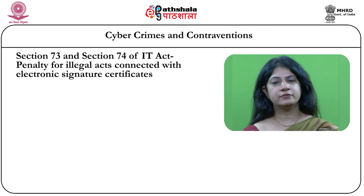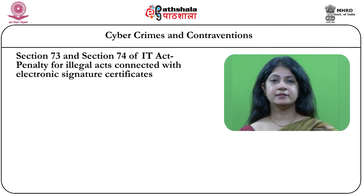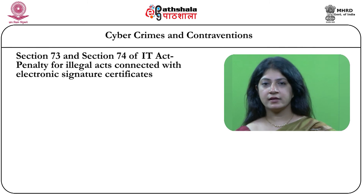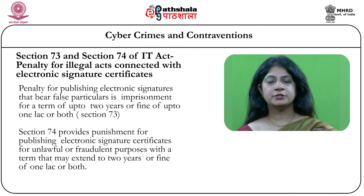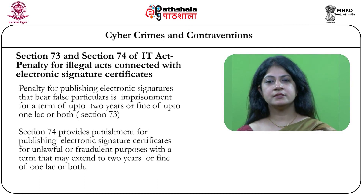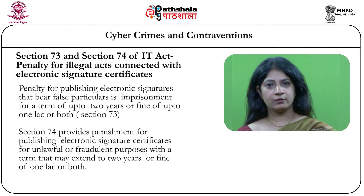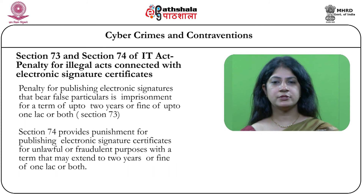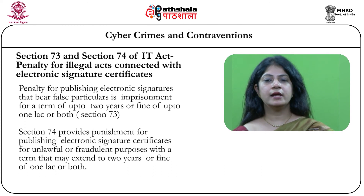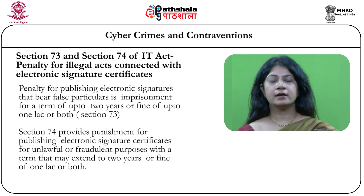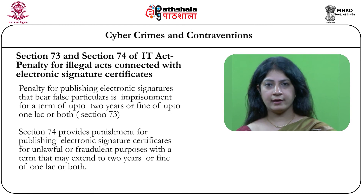Sections 73 and 74 of the IT act deal with penalties for illegal acts connected with electronic signature certificates. Section 73 provides punishment for publishing electronic signatures bearing false particulars — imprisonment up to 2 years or fine up to 1 lakh or both. Section 74 provides punishment for publishing electronic signature certificates for any fraudulent purposes, again punishable with imprisonment up to 2 years or fine of 1 lakh or both.